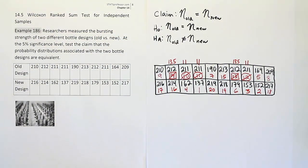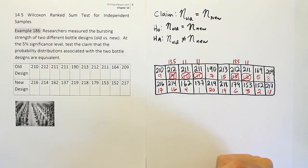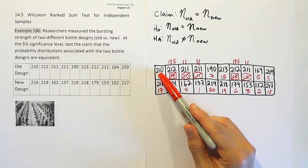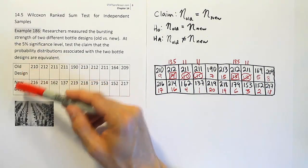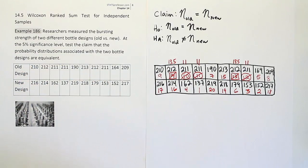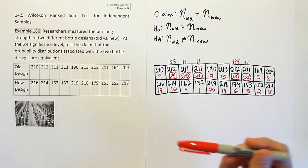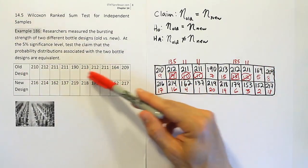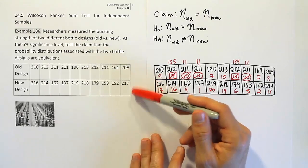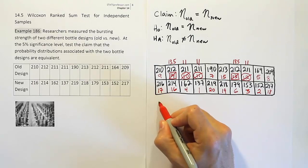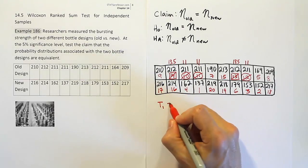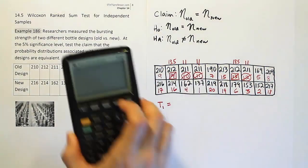The next phase is to add up the ranks to get the test statistic. The rule is that the smaller sample size row provides the test stat. Looking at the data, we have T1 — the rank total for the first group — which equals 9 + 13.5 + 11 + 11 + 7 + 15 + 13.5 + 11 + 5 + 8 = 104.